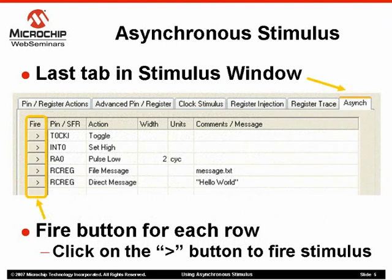There are six tabs on the stimulus window. The first five of them are for synchronous stimulus and we are not going to use them in this session. The last tab of the stimulus window looks like a spreadsheet. Below the header, each row represents an asynchronous stimulus. In this diagram, for example, there are five asynchronous stimuli. The first column is the fire button column with the arrow symbol for each stimulus row. By clicking on this button, the user can cause the asynchronous stimulus to happen once.